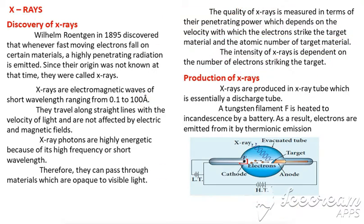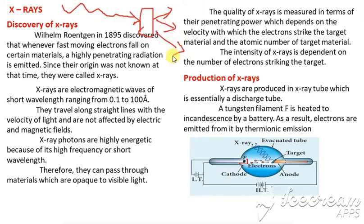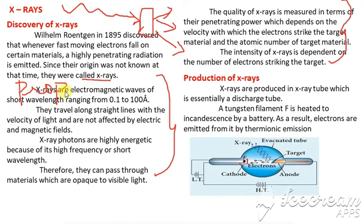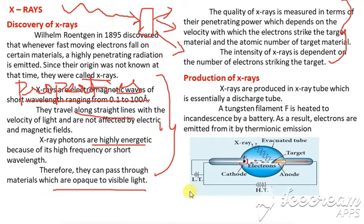So this is about the discovery of X-rays. When fast moving electrons strike a target, highly penetrating radiation is produced — and those rays are called X-rays. These are all the properties of X-rays: they travel in a straight line, they are highly energetic, and they can pass through opaque objects. The properties of X-rays can be asked separately as a three-mark question.